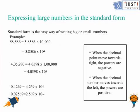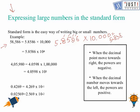Now, we move ahead to the topic which is expressing larger numbers in the standard form. Standard form is the easiest way of writing big or small numbers. For example, if it is 58,586, we can write it as 5.8586 times how many digits are there after the decimal to the right hand side. That is 4. That is, we need to times it by 10,000 or we can write it as 5.8586 times 10 to the power 4. Because 10 to the power 4 is same as 10,000.